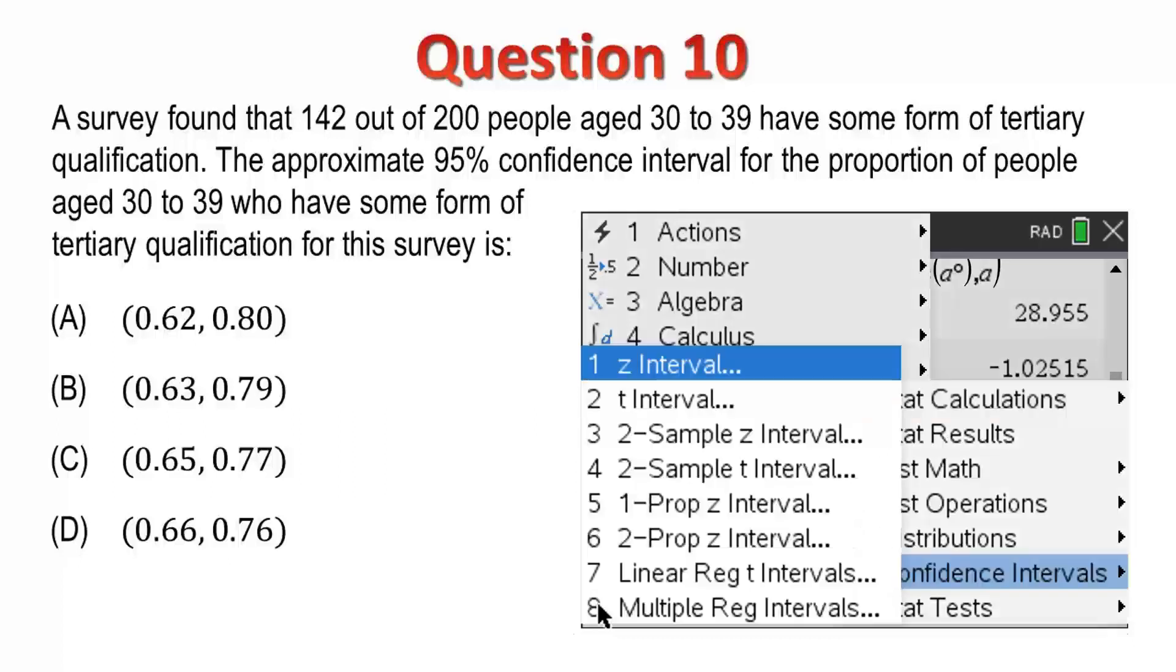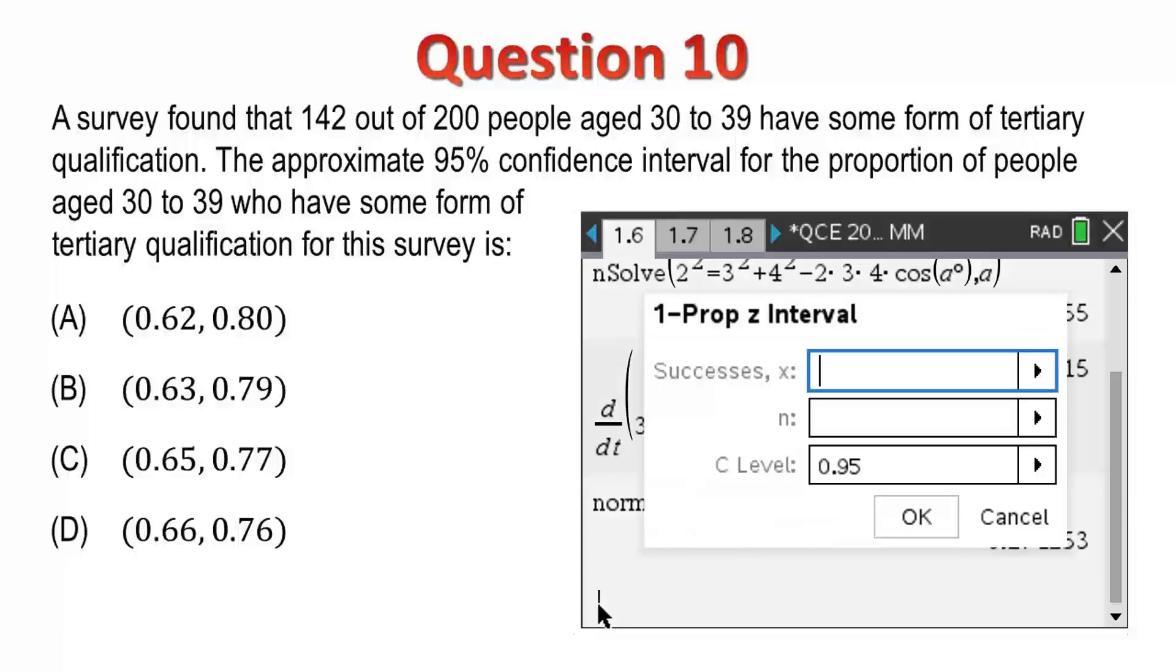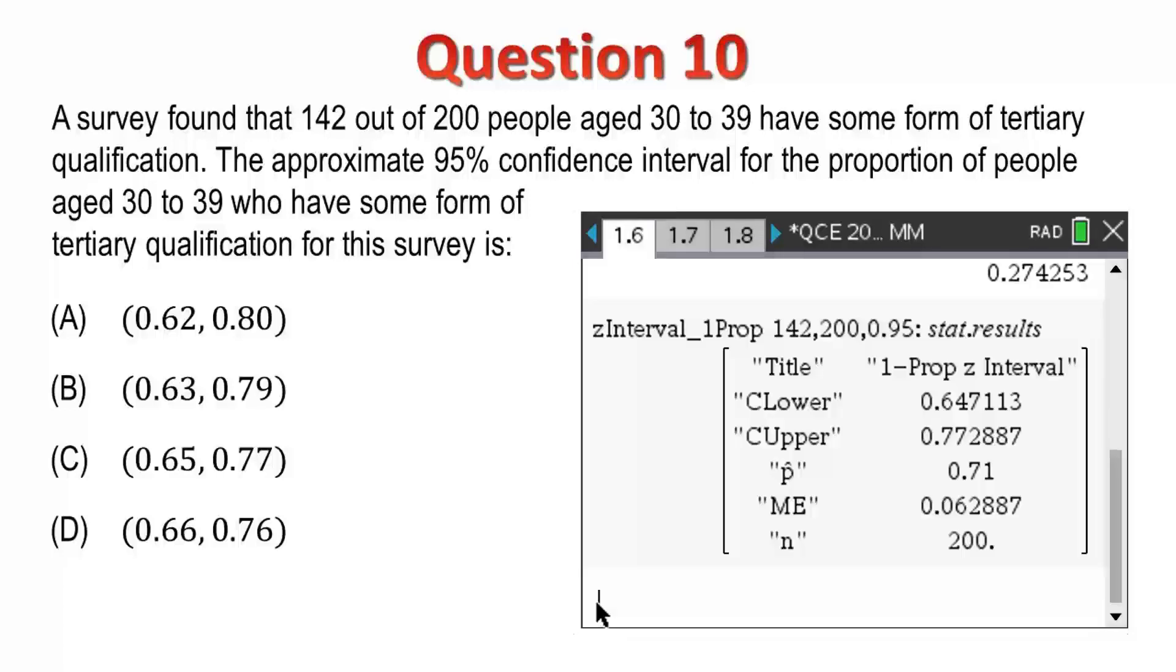The quantity of successes in our sample was 142, drawn from a sample size of 200, and we are required to determine a 95% confidence interval. We see from the results that the lower bound is 65%, the upper bound 77%, so our answer is option C.